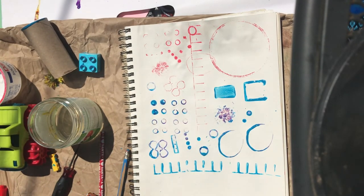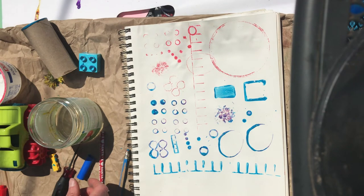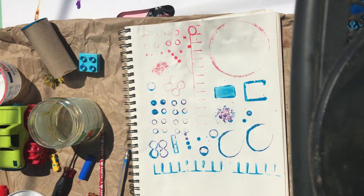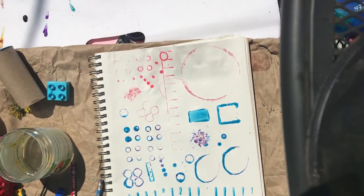And there you have it. That's how to printmake using found objects around your house using either marker or tempera paint. As you'll notice, I really was not creating a pattern or a design. I was really just stamping so you could see some different objects using marker or paint.